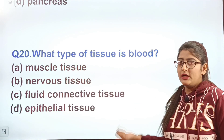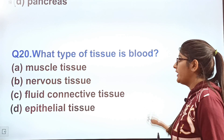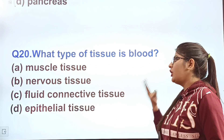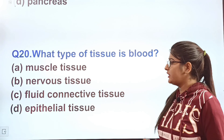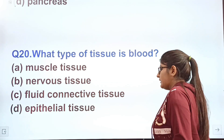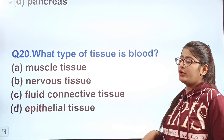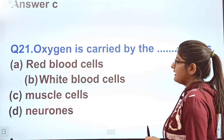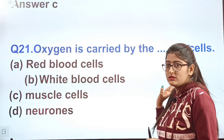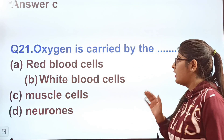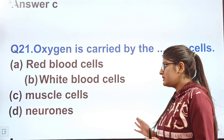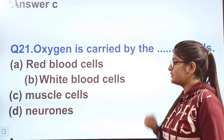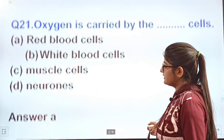Question 20: What type of tissue is blood? Option A — muscle tissue, option B — nervous tissue, option C — fluid connective tissue, option D — epithelial tissue. Question 21: Oxygen is carried by the dash cells. Which cells carry oxygen? Option A — red blood cells, option B — white blood cells, option C — muscle cells, option D — neurons.